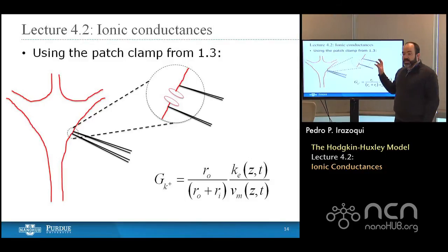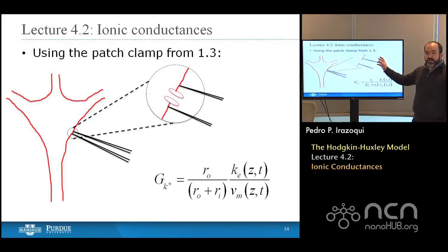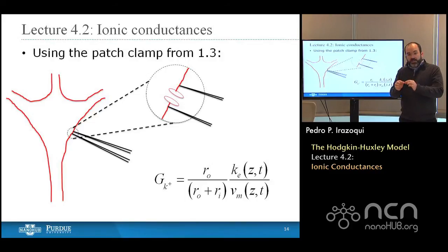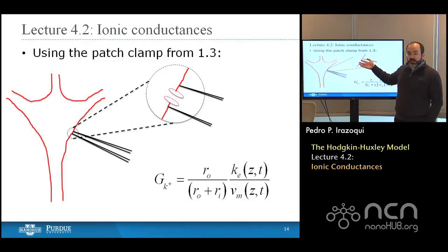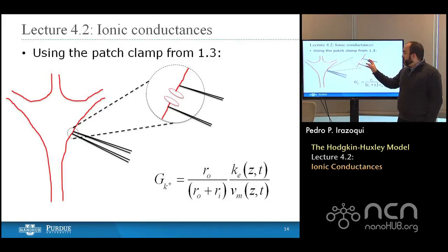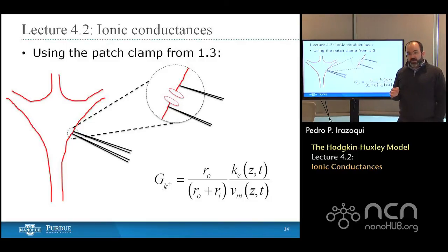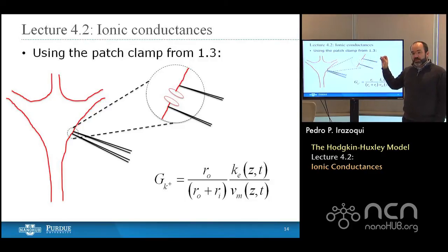We do this using the patch clamp. From lecture 1.3: we take a glass pipette, hold it over a flame, pull it so it becomes thinner and longer in the middle until it has an inner diameter of just a few microns, then polish and apply it to the surface of the cell membrane. Applying suction, we get a seal around a specific area of the membrane, isolating individual or small populations of ion channels. Using neurotoxins like tetrodotoxin or tetraethylammonium to block either potassium or sodium ion channels selectively, we can measure the membrane current of potassium or sodium independently.